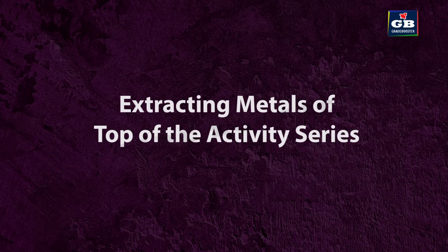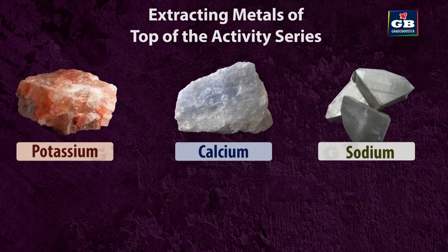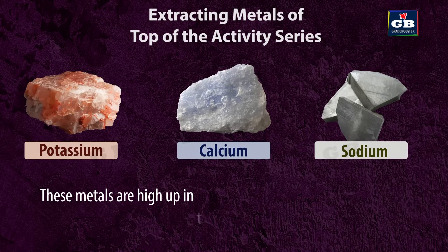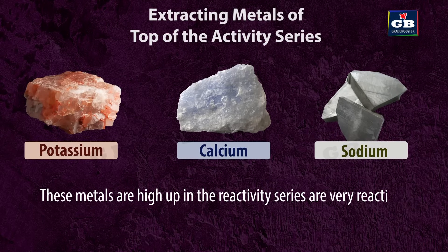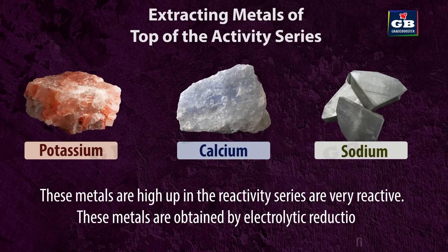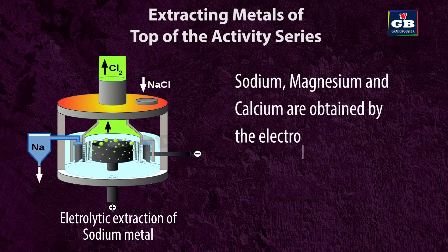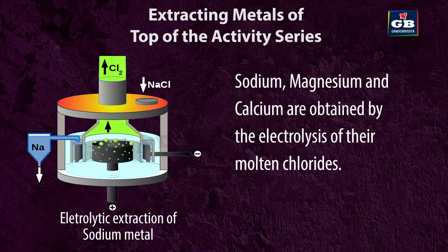Extracting metals at the top of the activity series: Potassium, calcium and sodium are highly reactive metals high up in the reactivity series. These metals are obtained by electrolytic reduction. For example, sodium, magnesium and calcium are obtained by the electrolysis of their molten chlorides.